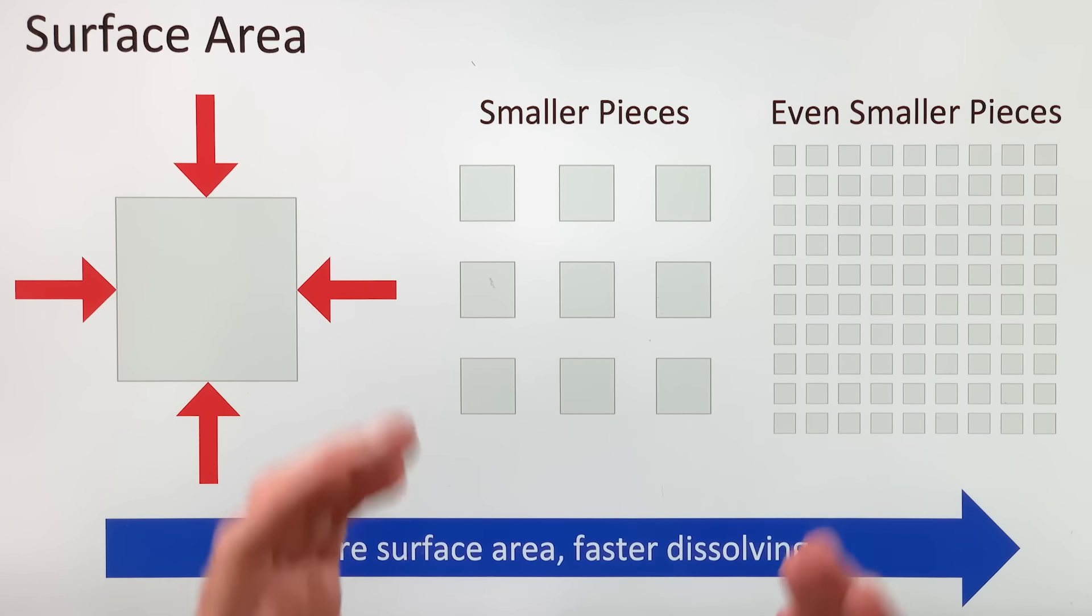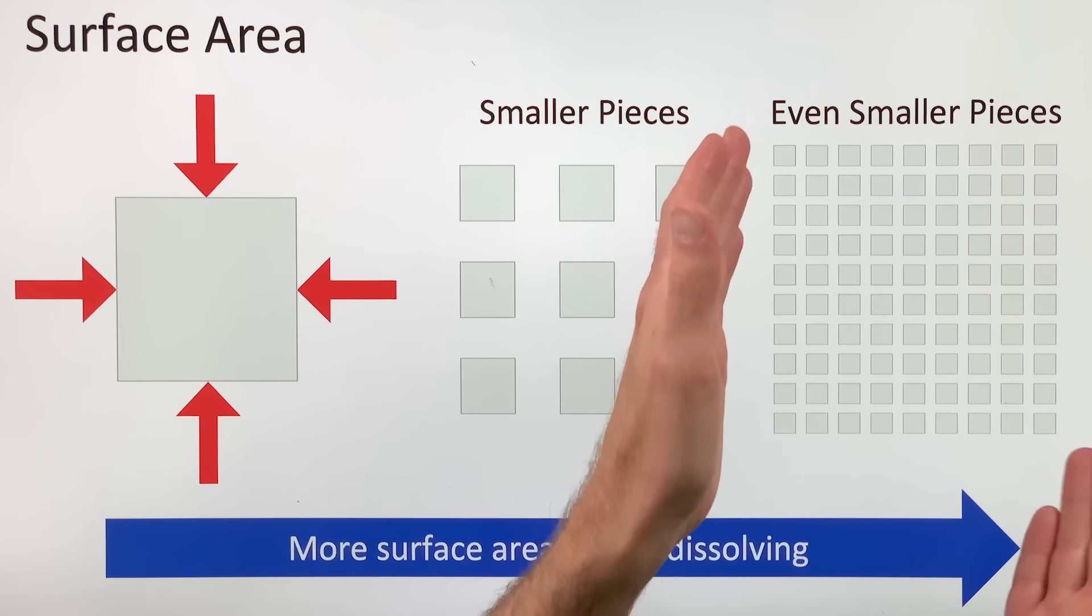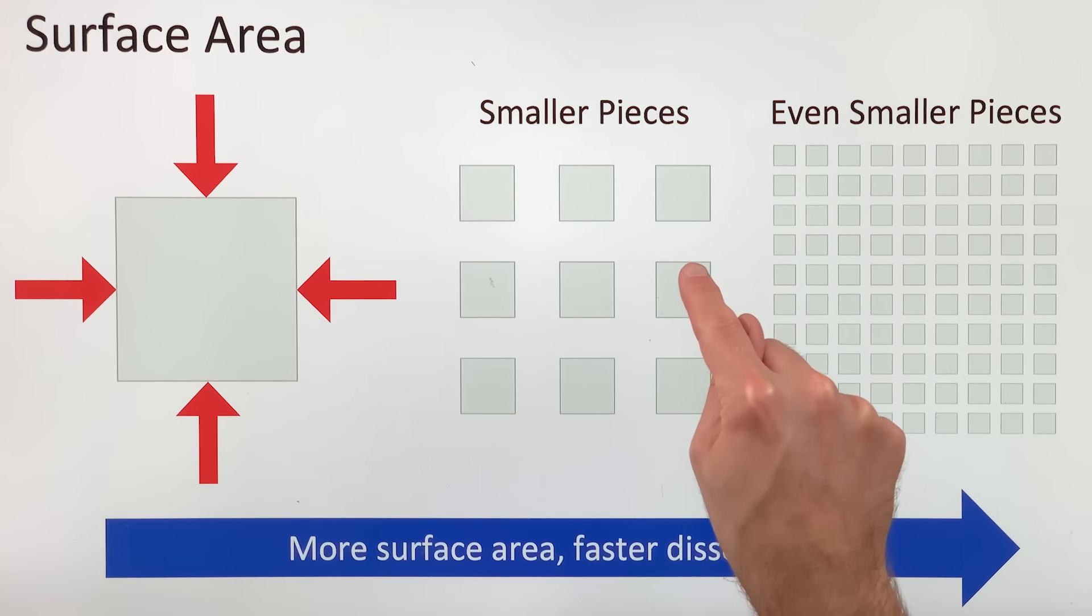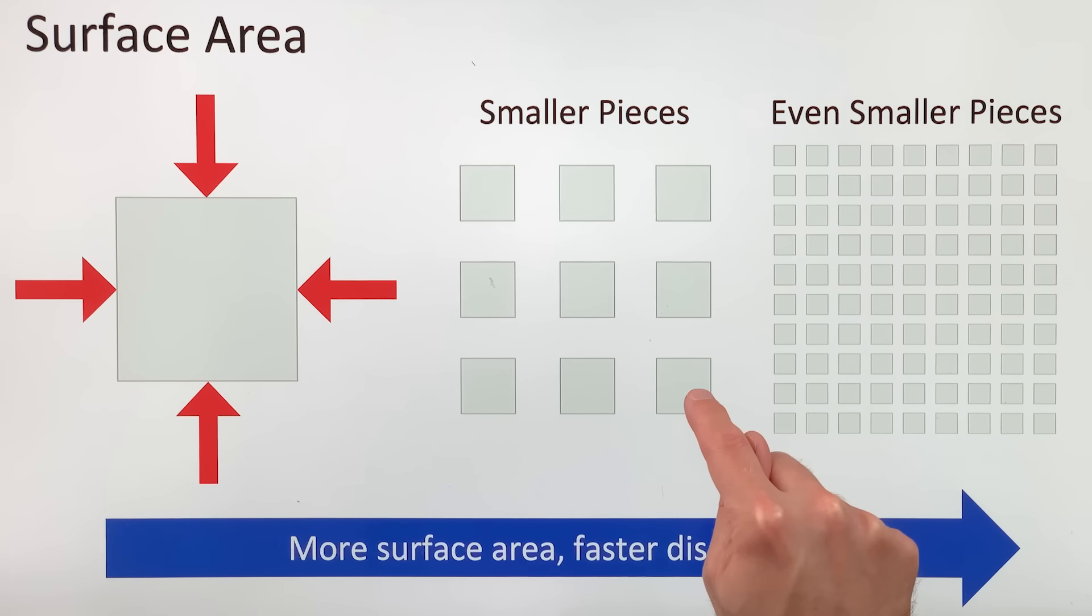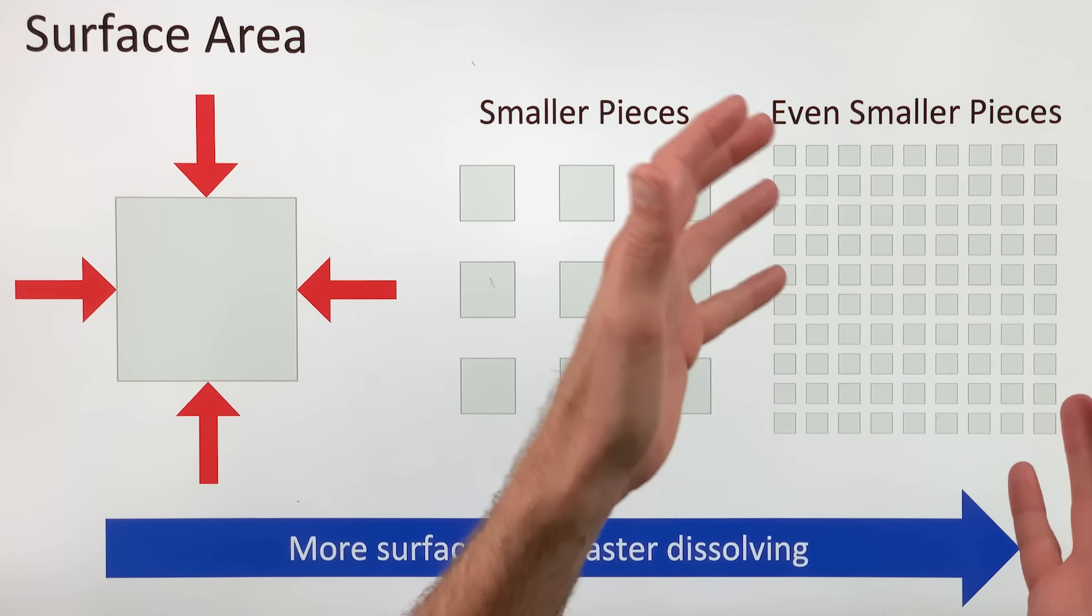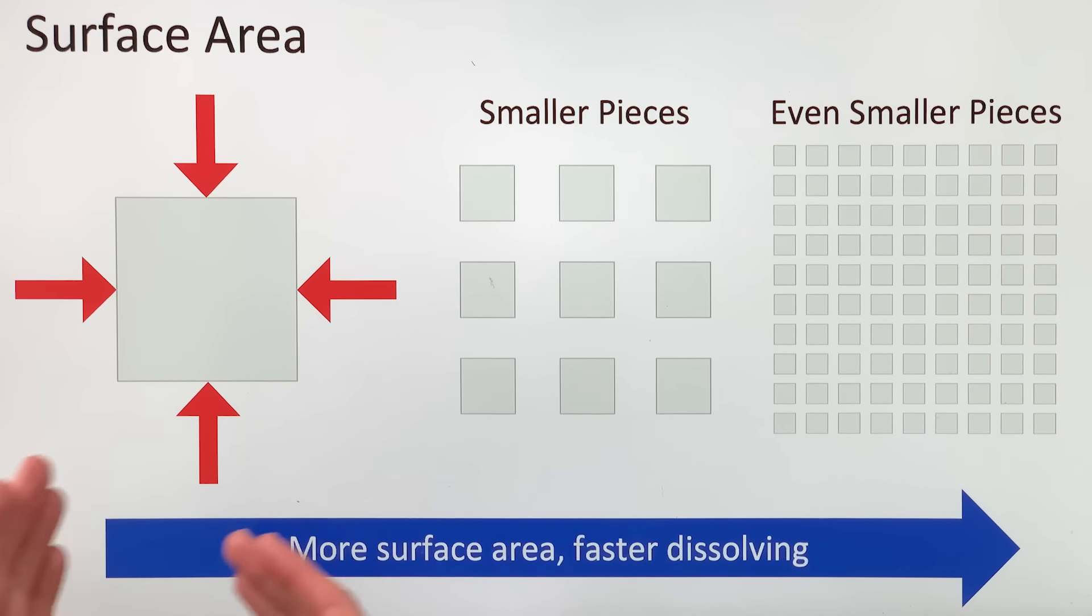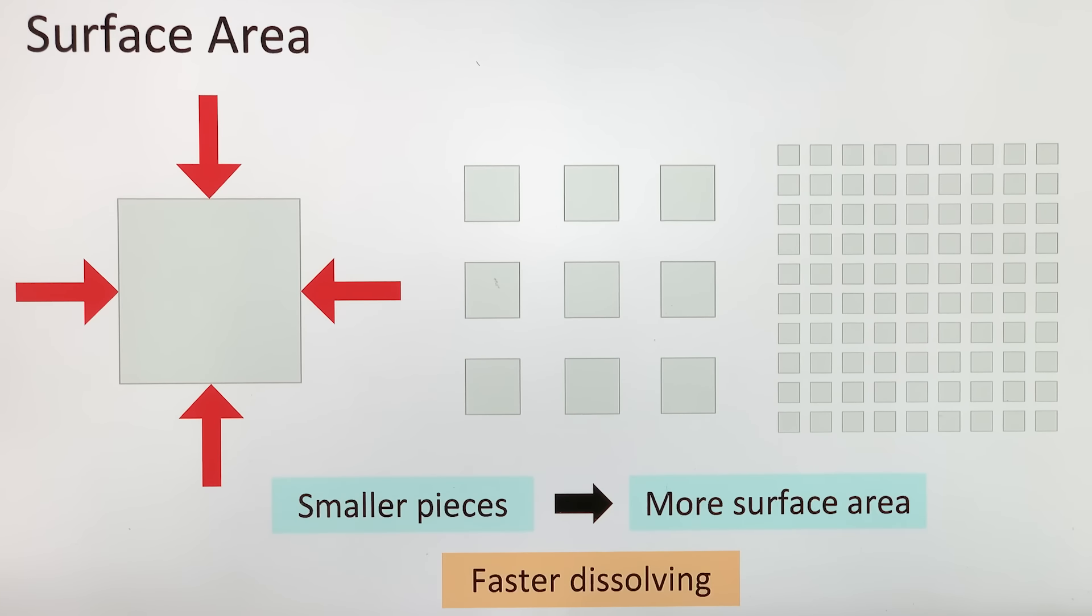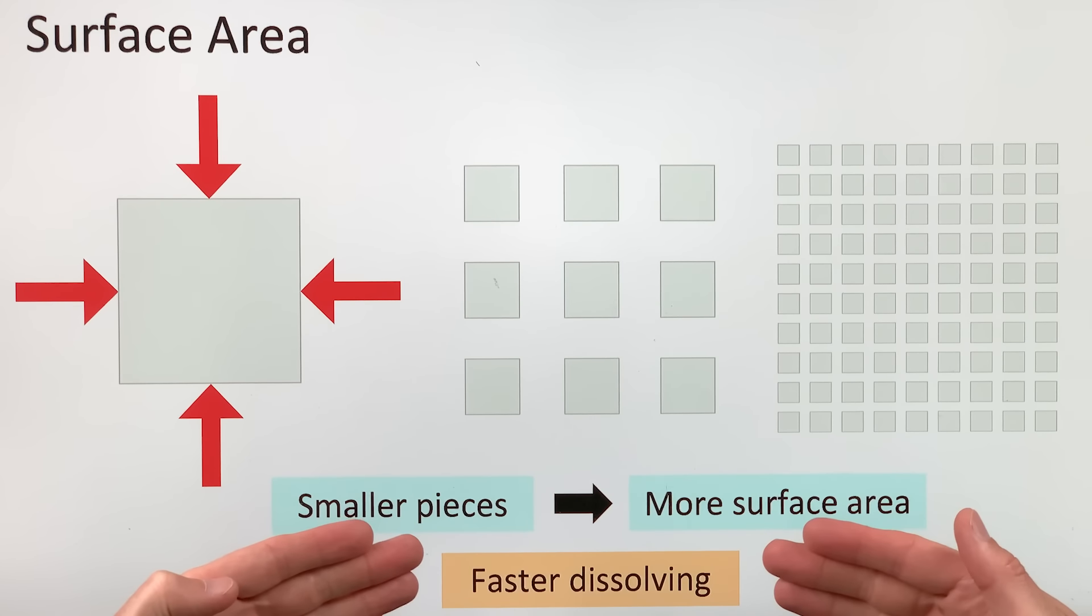And you could crush these chunks into even smaller pieces. You would expose even more surface area to the solvent. The solvent can now interact with all the solute that used to be trapped inside these pieces. It can get into all of these areas, and these pieces would dissolve even faster. So the main point here is smaller pieces, more surface area, faster dissolving.